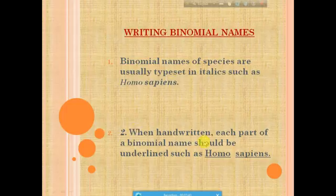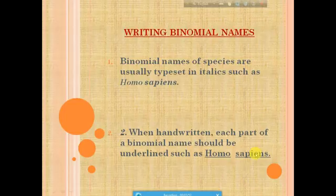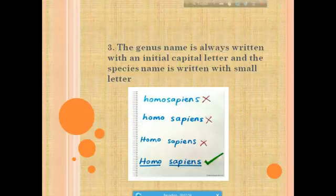When handwritten, each part of a binomial name should be underlined, such as Homo sapiens. Third, the genus name is always written with an initial capital letter and the species name is written with a small letter.